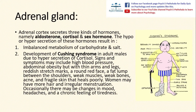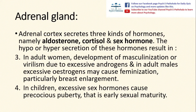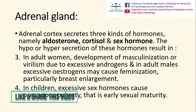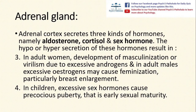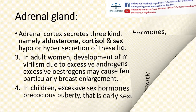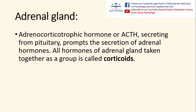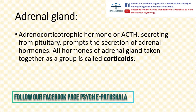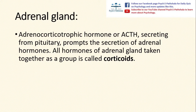Women may have more hair and irregular menstruation. Occasionally there may be changes in mood, headaches, and a chronic feeling of tiredness. In adult women, development of masculinization or virilism may occur due to excessive androgens; in adult males, excessive estrogens may cause feminization, particularly breast enlargement. In children, abnormal adrenal cortex functioning may lead to excessive sex hormones causing precocious puberty, meaning early sexual maturity. ACTH secreted from the pituitary gland prompts the secretion of adrenal hormones. All hormones of the adrenal gland taken together are known as corticoids.